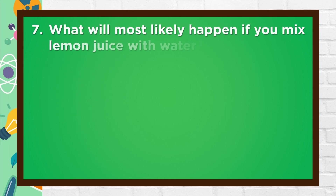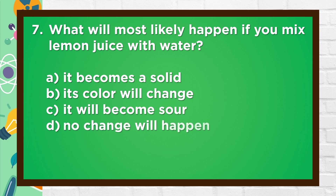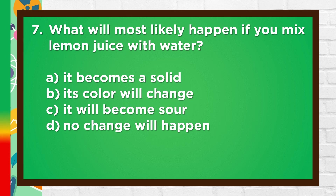Number 7. What will most likely happen if you mix lemon juice with water? A. It becomes a solid, B. Its color will change, C. It will become sour, D. No change will happen. The answer is C. It will become sour.